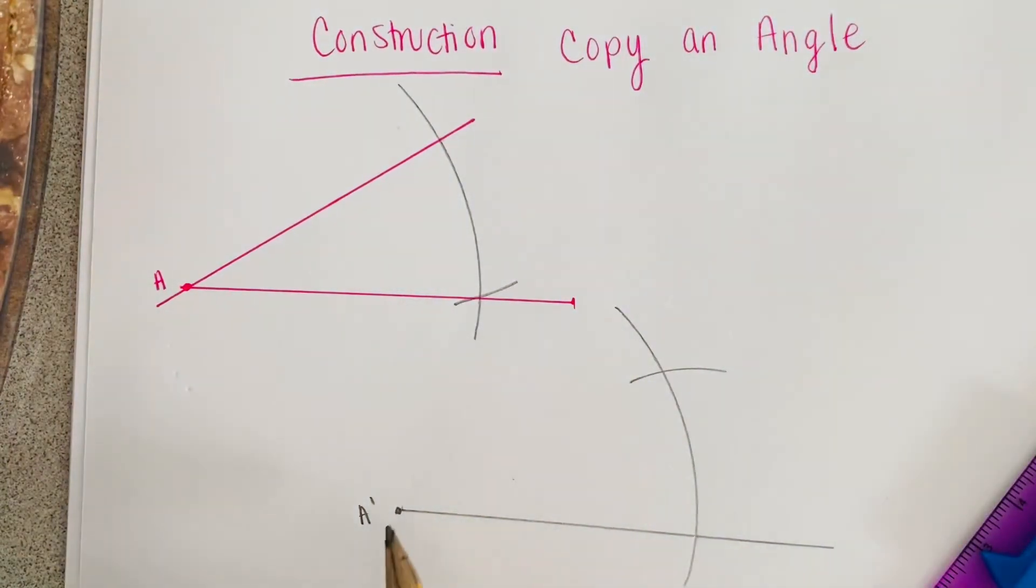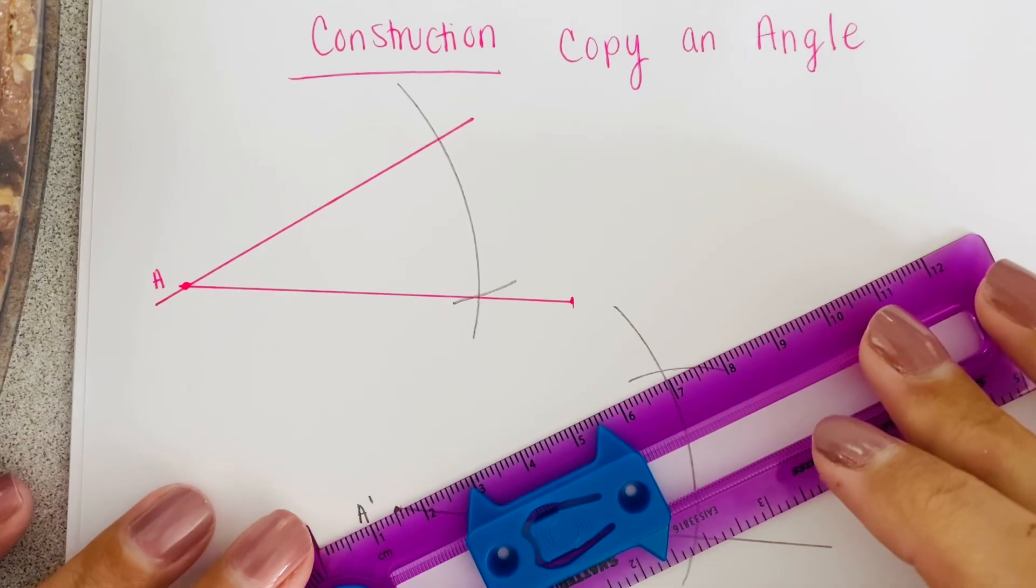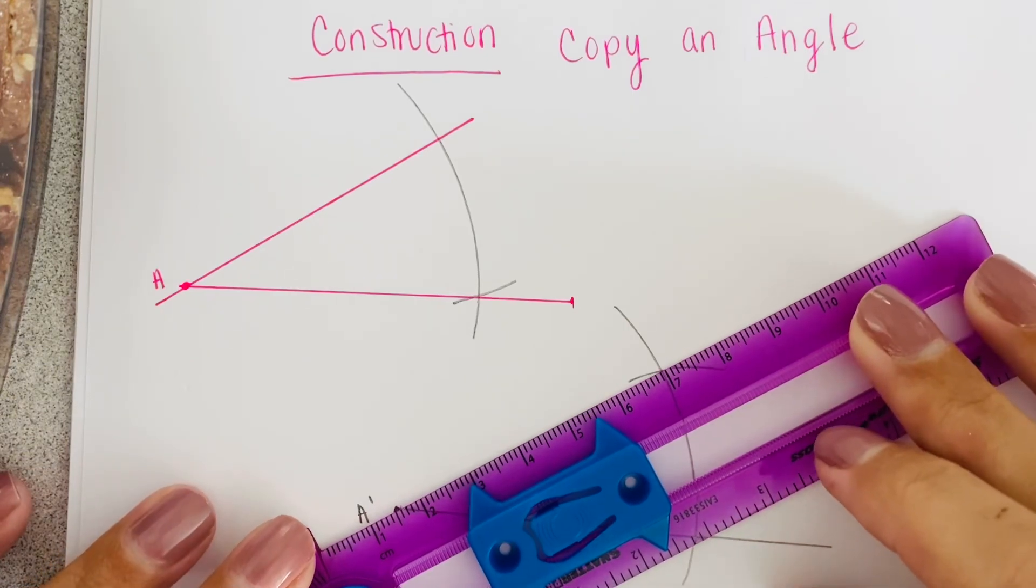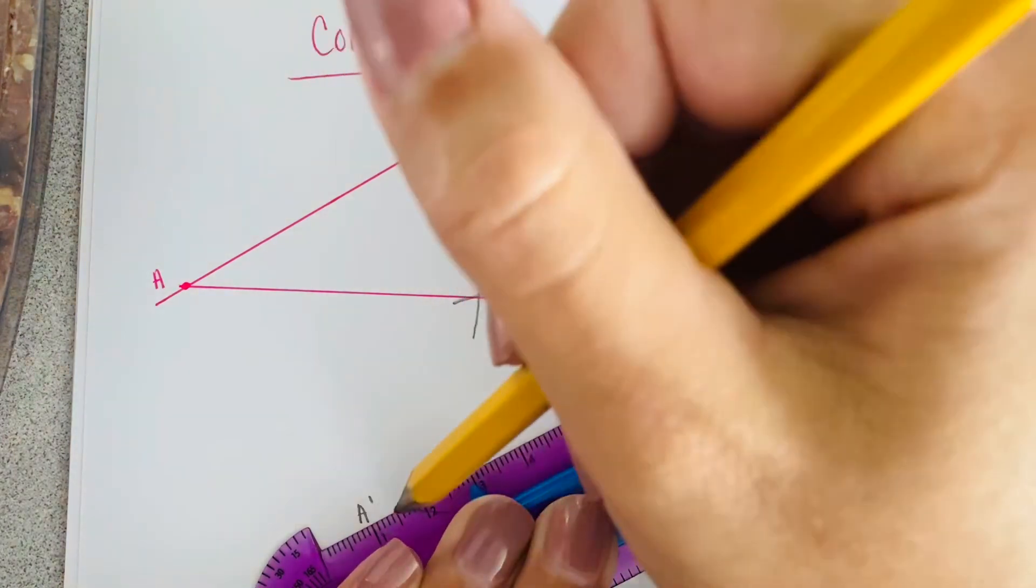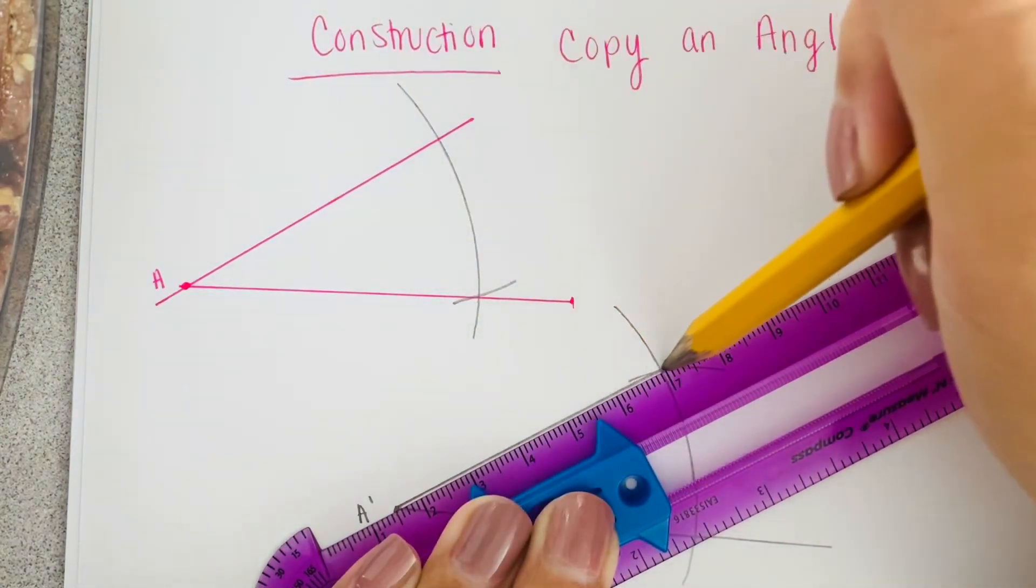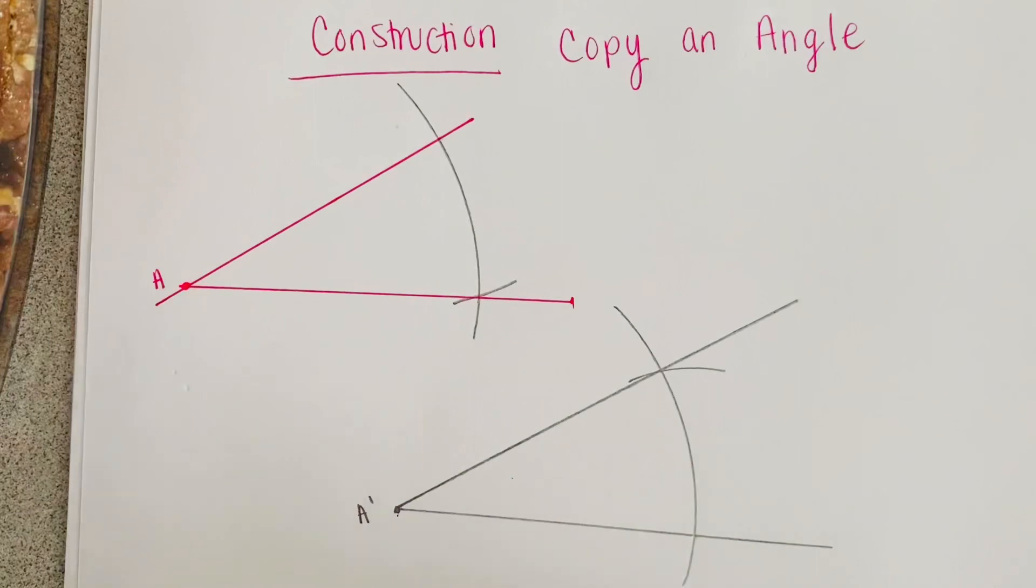Now I'm going to connect A prime to this intersection. And that is the copy of an angle. If you want to make sure your angles match, you can use your protractor. Pause the video, rewind the video as you need to. Practice as many times as you need to.